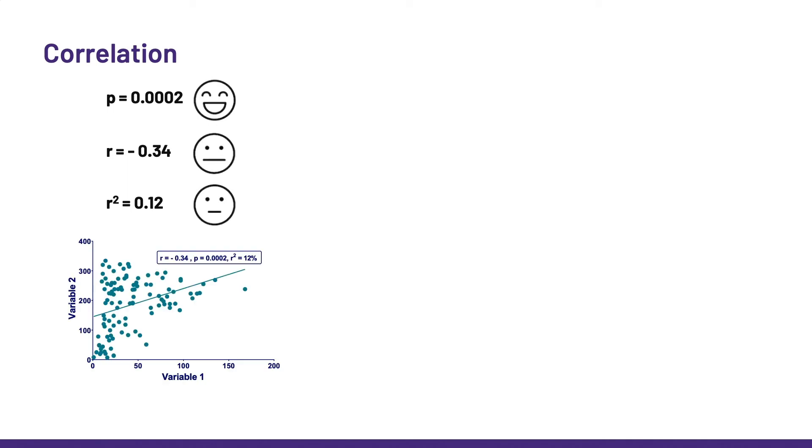Say we are told about an association between two variables, and all we see at first is the p-value, which happens to be very low. So, we think, wow, that looks exciting. And then we get r itself, and see it is minus 0.34, which is a bit disappointing, right? Finally, we work out r-squared, and we realize it's only 12%.